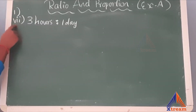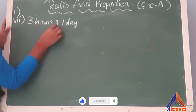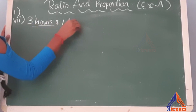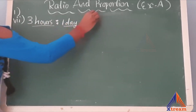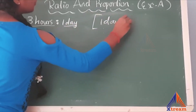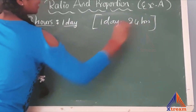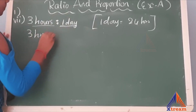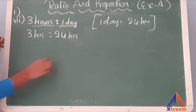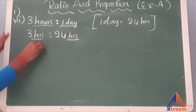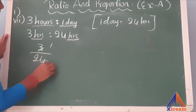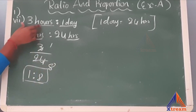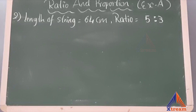Now I am solving the seventh sub-question: 3 hours to 1 day. It is the same as the previous one — the units are different, hours and day. We cannot convert hours into day, so we should convert day into hours. That is 1 day is equal to 24 hours. So you will get 3 hours to 24 hours. Both units are now hours, so you can divide: 3 eights are 24, so your ratio will be 1 is to 8. This is the simplest form of 3 hours to 1 day.